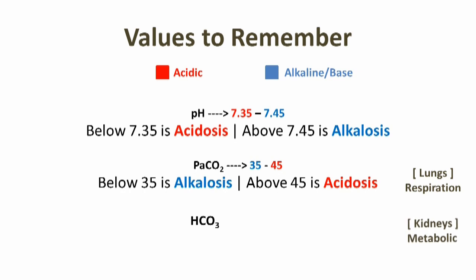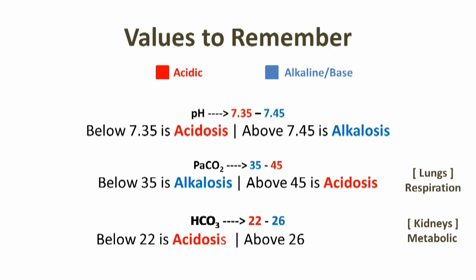Remember HCO3 as metabolic. The normal value of HCO3 is 22 to 26. This is like blood pH, so it should be easy to remember. Below 22 is acidosis and above 26 is alkalosis. Next, let's examine possible conditions.